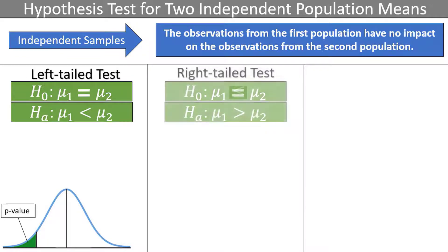For a right-tailed test, we believe the first population mean is greater than the second, indicated by a greater than sign in the alternative hypothesis, and the p-value is in the right tail of the distribution.